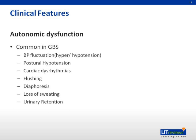Autonomic dysfunction in GBS is common. The usual manifestations include blood pressure fluctuation, postural hypotension, cardiac dysrhythmia, flushing, diaphoresis or loss of sweating, and urinary retention.